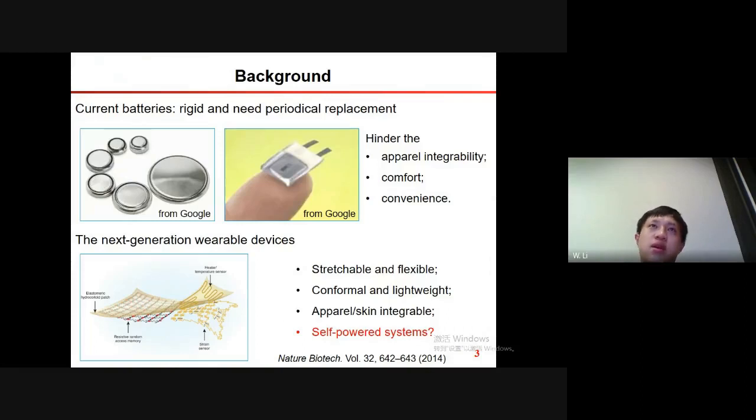But these devices are still using batteries for the power supply, even though batteries may become small in size. But they are still rigid and you'll have to replace them periodically. And they can hinder the integrability, comfort, and compactness. The next generation wearable devices are expected to be stretchable and flexible, conformal and lightweight, apparel or skin integratable. So what is the power supply solution for the next generation wearable devices?